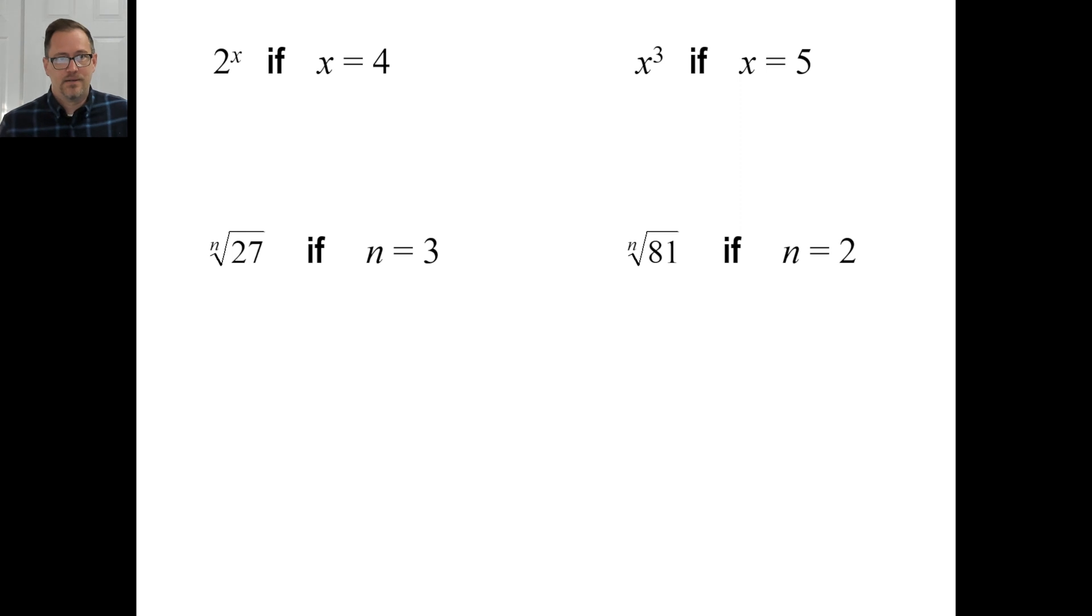All right. This one will be 2 to the x power. x equals 4. That means you're going to go 2 to the 4th power. Well, that means 2 times 2 times 2 times 2, which will give you 16. There you go.